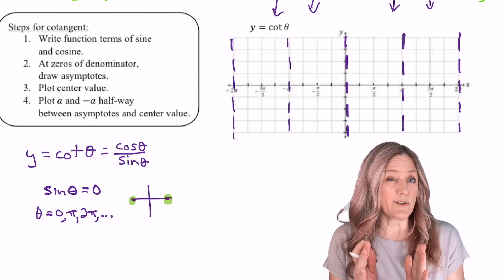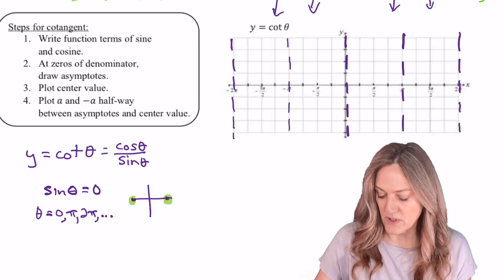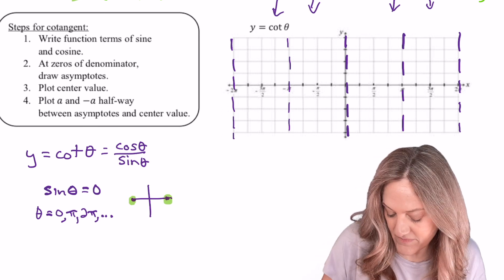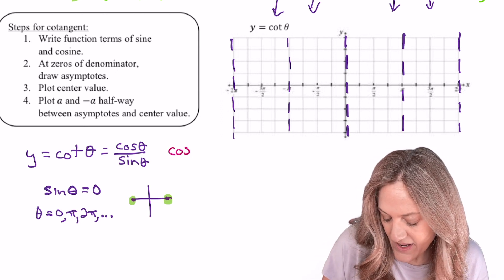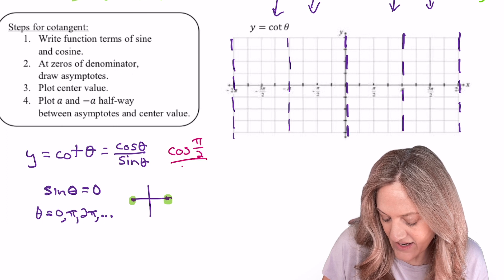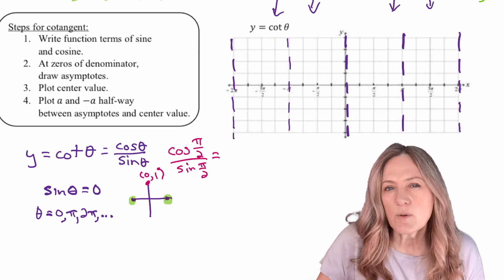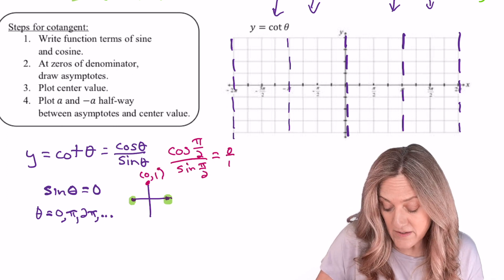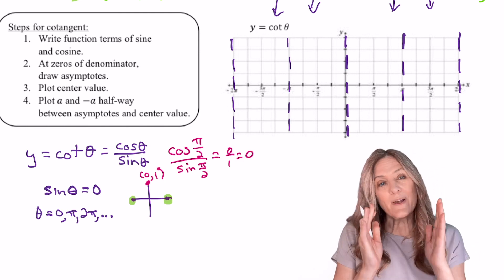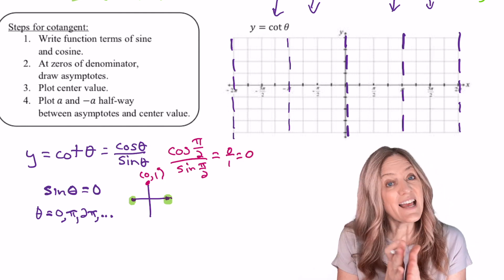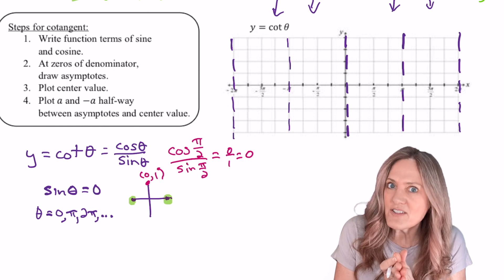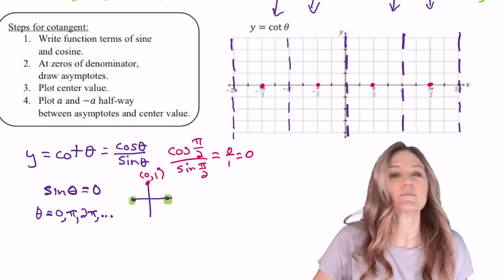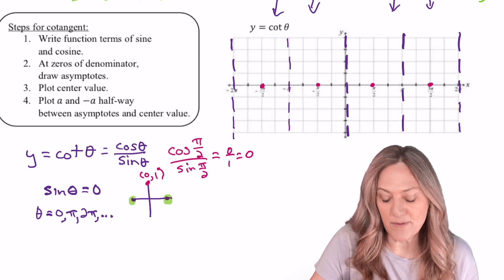Next, let's look at the center between two vertical asymptotes. So let's consider π/2. Cosine of π/2 divided by sine of π/2. So we know that 0 divided by 1 is just 0. So between the two vertical asymptotes, the center is going to be 0, much like tangent. I'll go ahead and plot all of those 0s.